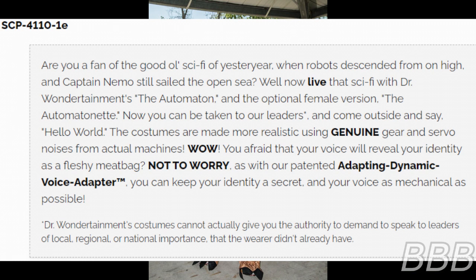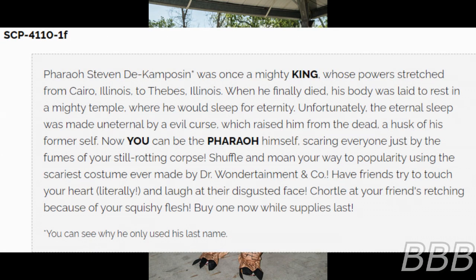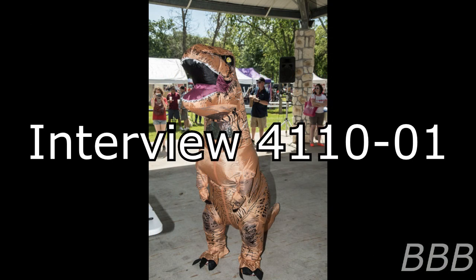Specialized note found with SCP-4110-1-F: 'Pharaoh Stephen D. was once a mighty king whose power stretched from Cairo to Thebes, Illinois. When he finally died, his body was laid to rest in a mighty temple where he would sleep for eternity. Unfortunately, the eternal sleep was made uneternal by an evil curse which raised him from the dead — a husk of his former self. Now you can be the Pharaoh himself, scaring everyone with the fumes of your still-rotting corpse! Buy one now while supplies last. (You can see why he only used his last name.)'